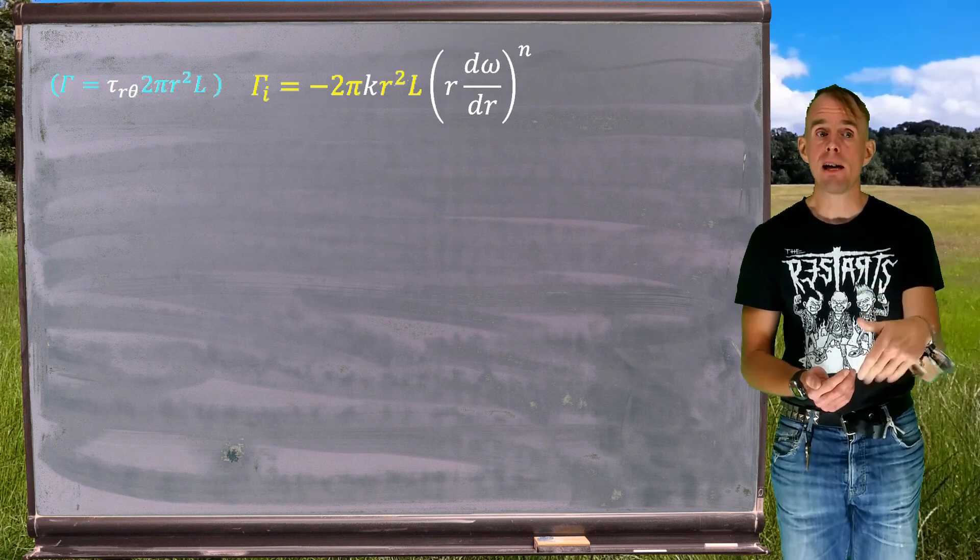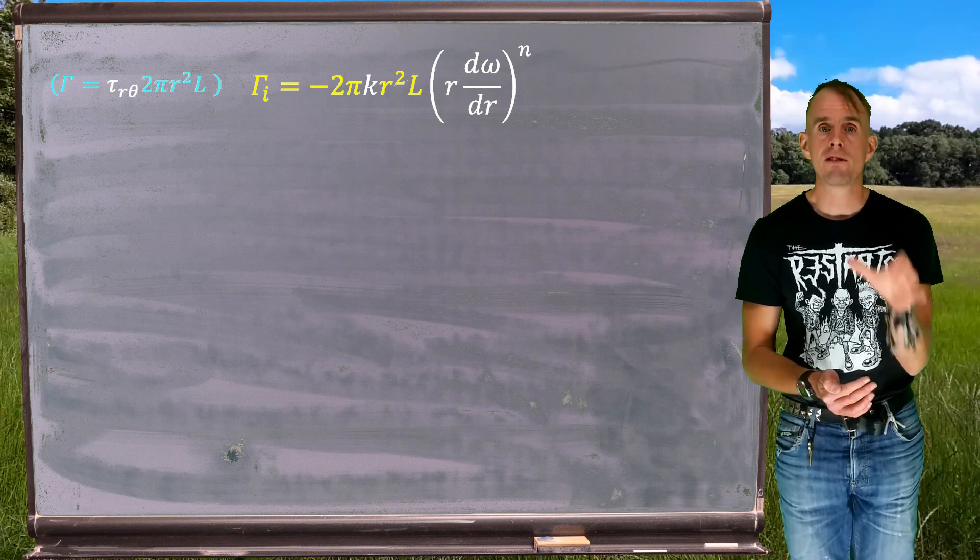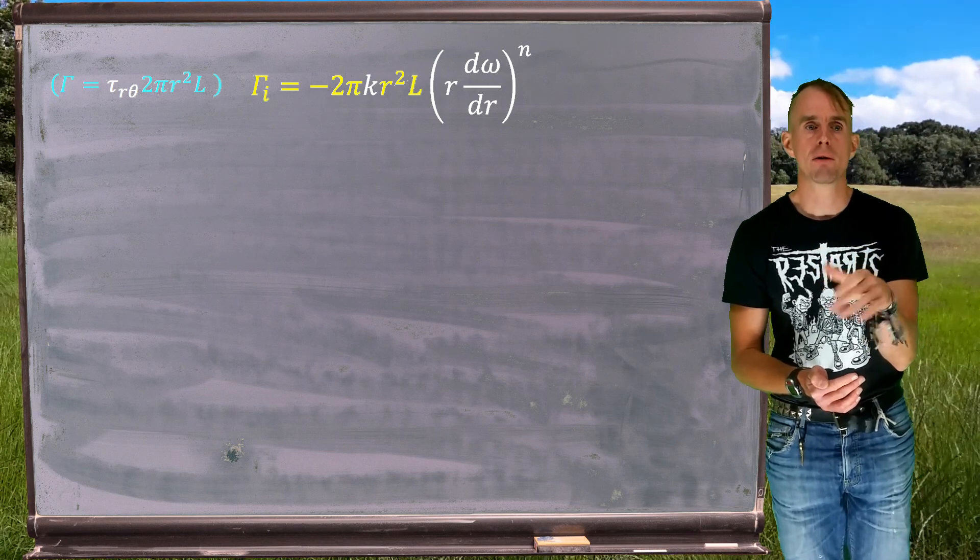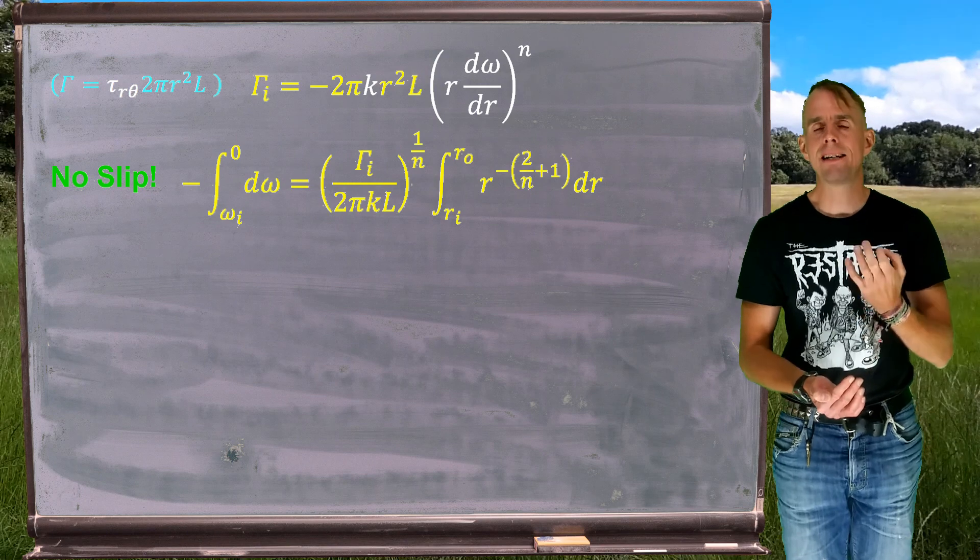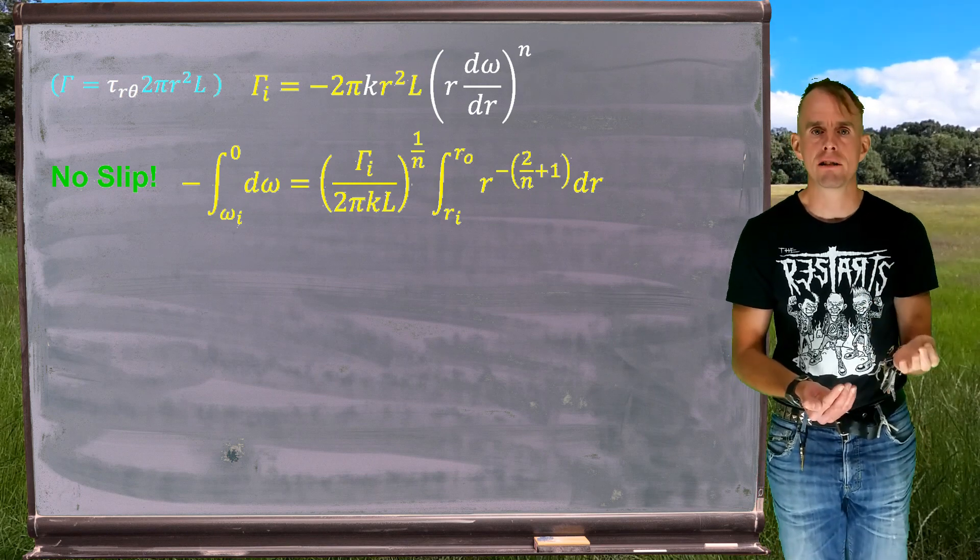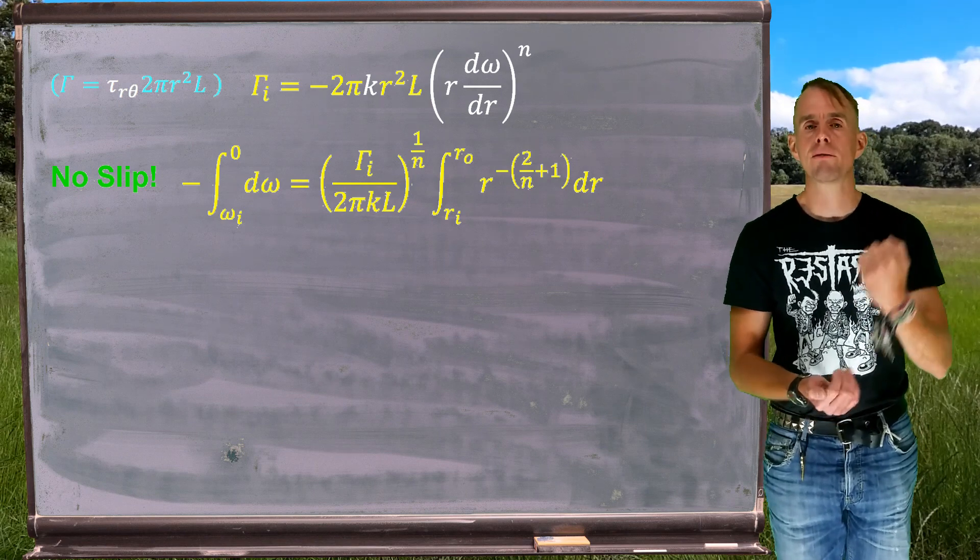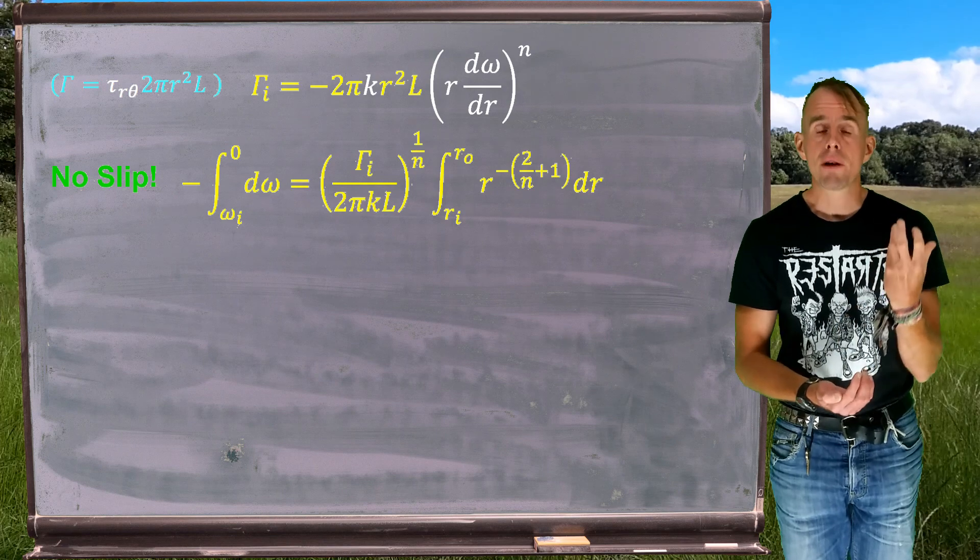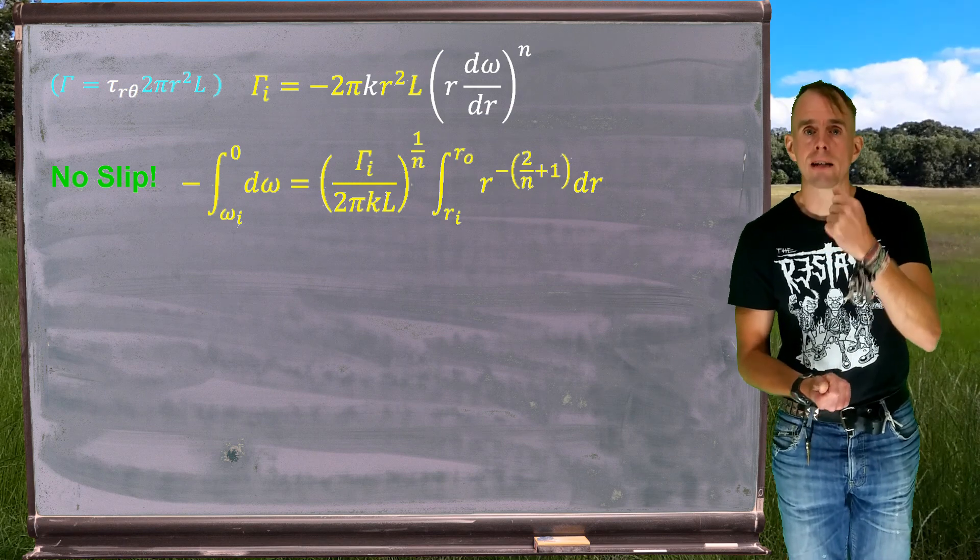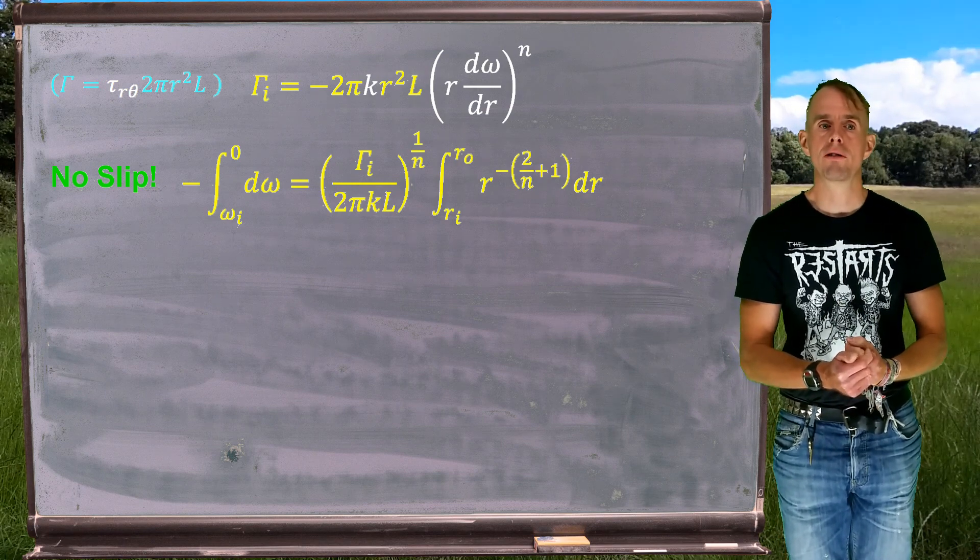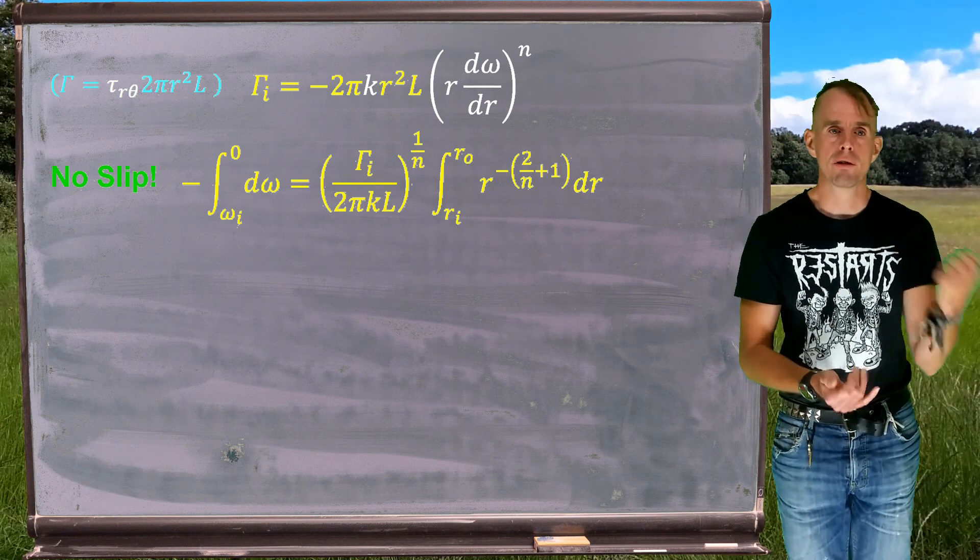And in the centre of the board, there is the expression for torque with the power law constitutive equation substituted in. And we can see that we've got k, our consistency index, multiplied by γ̇, which is r dω/dr, raised to the power n. And so that gives us something to integrate. With a little bit of rearrangement, we get the following integral. And again, we're going to assume no-slip boundary conditions when we look at our integration limits. And so we're going from a zero angular velocity on the outer cylinder to whatever angular velocity the inner cylinder is rotating at.